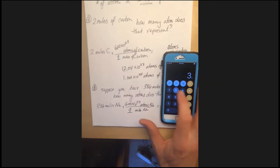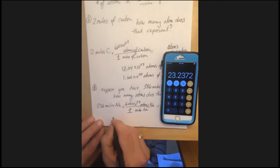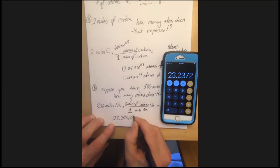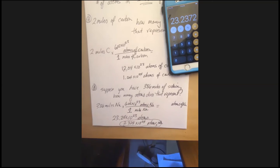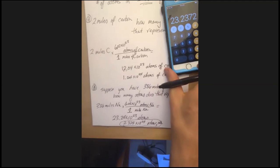So I've got 3.86 times 6.02 equals 23.24 times 10 to the 23rd atoms, so that's going to be 2.324 times 10 to the 24th atoms. And because I feel pretty confident about that, I'm going to circle it.